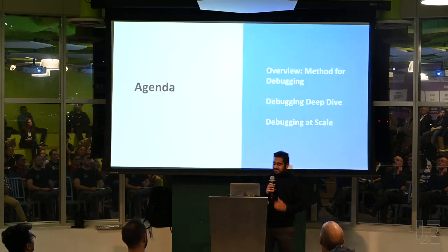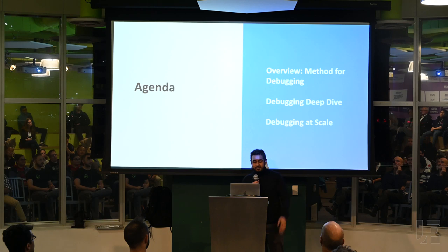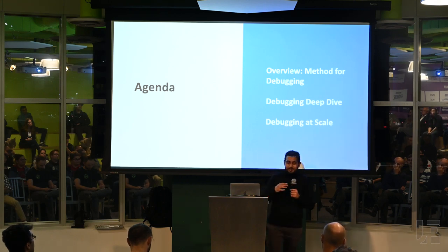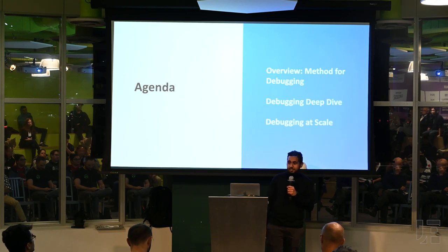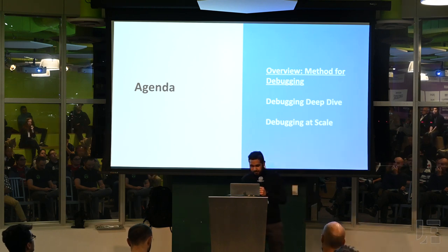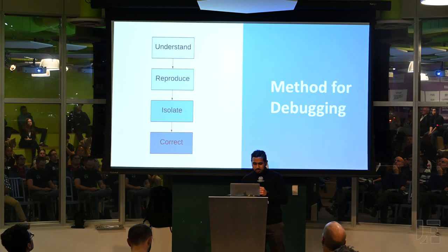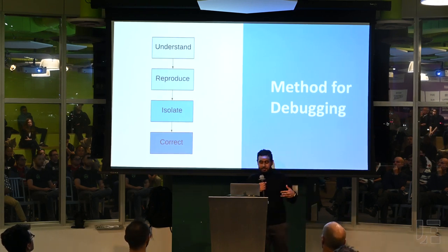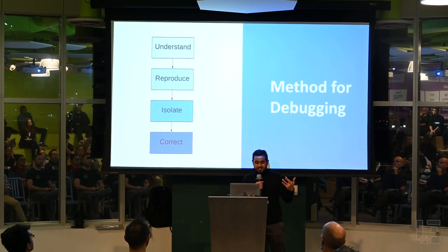For today's agenda, we have three parts. The first part is an overview of my method of debugging. The second part is a deep dive into some of those methods. And the third part is debugging at scale — how do we take this process and actually apply it when your app gets very large? I like to think of debugging in four separate phases: understand, reproduce, isolate, and correct.